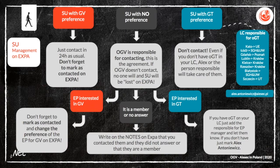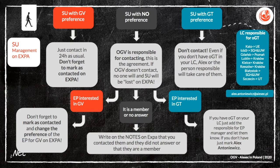This is a scheme of what you should do when you are assigned as EPM. Maybe this person is interested in GV, so you have to contact them within 24 hours as usual. Don't forget to mark as contacted on Expa. Maybe this person doesn't have any preferences — you have to contact them because all OGV people are responsible for this. If you don't contact this person, no one will. If you contact them and they are interested in GV, you have to contact them and change their preferences on Expa. If they did not answer, write in the notes on Expa that you contacted them and they did not answer.